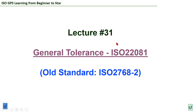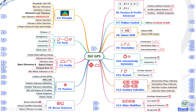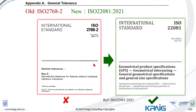Welcome to lecture 31. We're going to introduce the new standard for general tolerance, ISO 22081, and explain why the old famous standard ISO 2768-2 has been removed and is now obsolete.